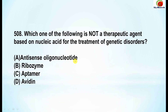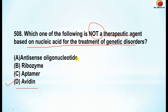Question 508: Which one of the following is not a therapeutic agent based on nucleic acid for treatment of genetic disorders? The correct option is ribosomes. The rest — antisense oligonucleotides, ribozymes, and aptamers — are all therapeutic agents.